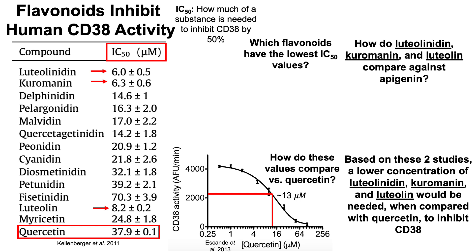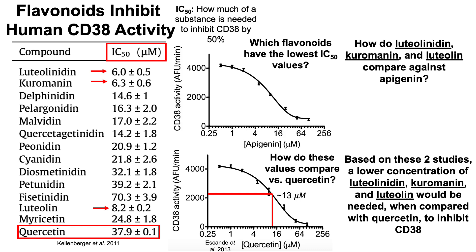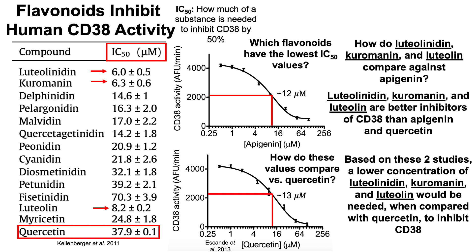What about apigenin? In this data, plotting CD38 activity against apigenin concentration, apigenin's IC50 for inhibiting CD38 was about 12 micromolar. The three flavonoids again show lower IC50 values for inhibiting CD38 when compared with apigenin's 12 micromolar. So we can conclude that luteolinidin, curomanin, and luteolin are better inhibitors of CD38 than both apigenin and quercetin.